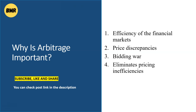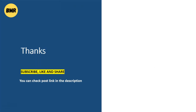There are four key points. Number one: efficiency of the financial market. Number two: price discrepancies. Number three: bidding war for low-priced assets. Number four: elimination of pricing inefficiencies.